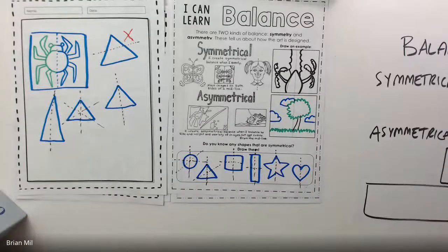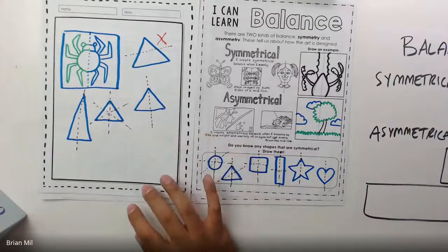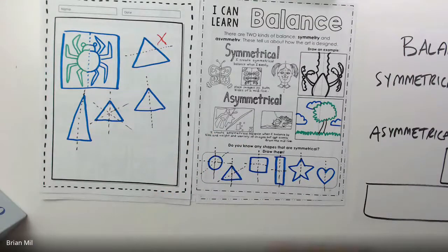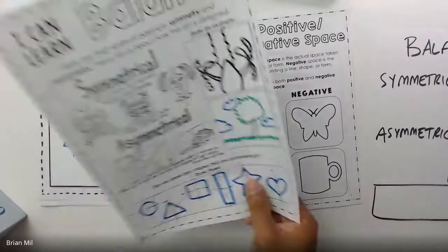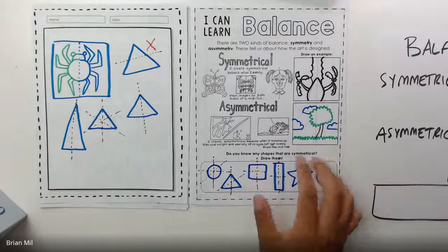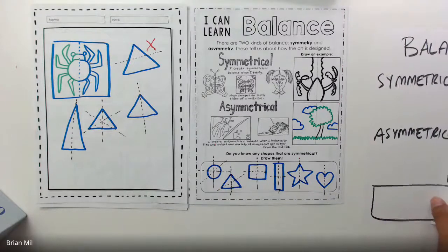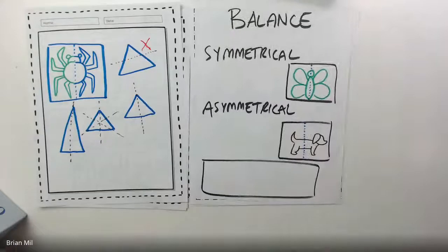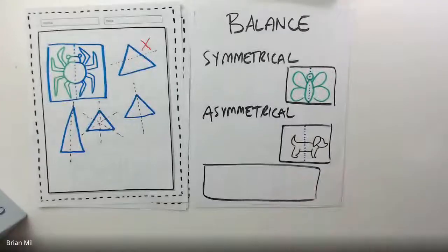That's the lesson on symmetry. If you want to keep going, you can use the other side of your workbook to make more symmetrical shapes. Over here you can see what's going on next week — we'll be talking about positive and negative space, so that's for next class. That's the example of balance. Since we did the majority of symmetry last year, you guys are very well informed on balance today.